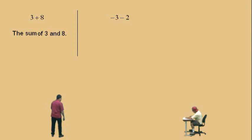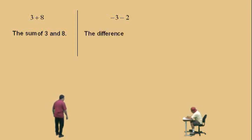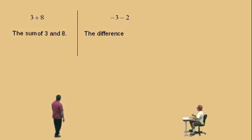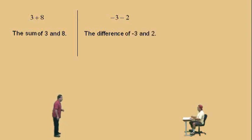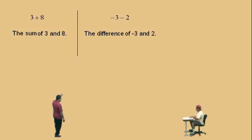Now what's this one? Be careful — is this a sum or a difference? Difference. It's a difference. Now, it's the difference between what two numbers, Charlie? Negative three and negative two? No, it's not negative three and a negative two — it's a negative three and a positive two. A lot of people make this mistake, so be careful. It is a difference, and the difference is between a negative 3 and 2.